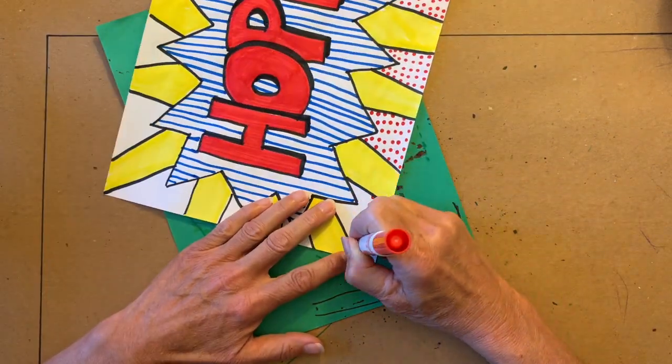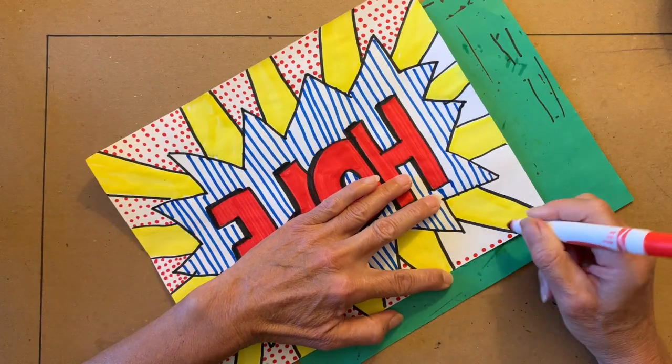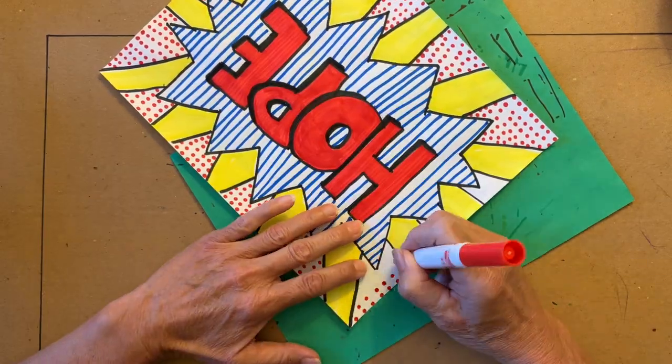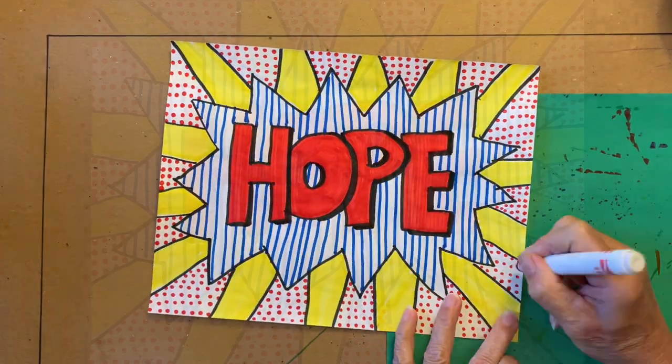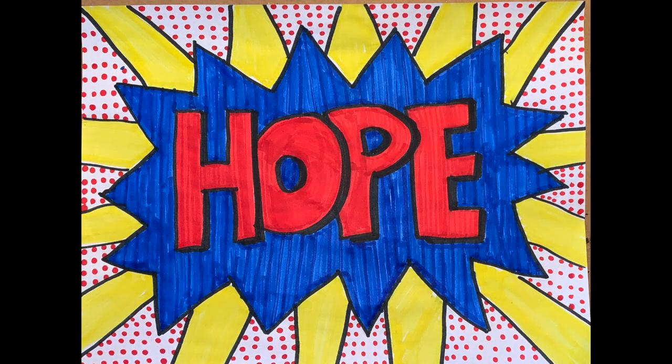When you create your Roy Lichtenstein inspired artwork please use a red, yellow, blue, black and white color palette. Be sure to include some Benday dots as part of your design. I can't wait to see what you create. Please take a photo of your finished artwork and attach it in Google Classroom.